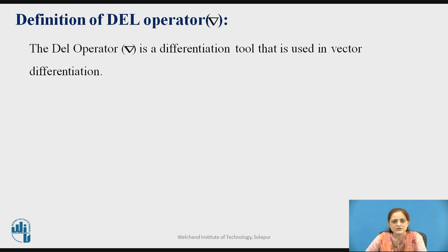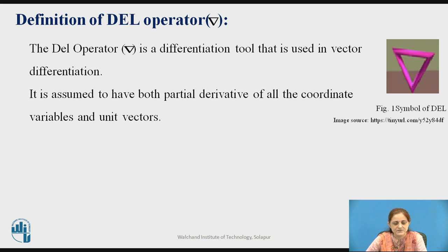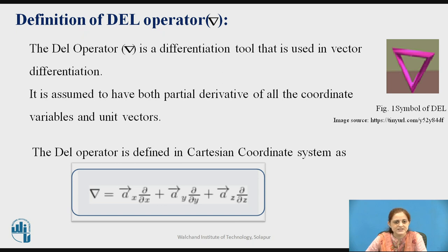Now, define the del operator. What is the del operator? The del operator is a differentiation tool used in vector differentiation. By using the del operator, you can get the partial differentiation with respect to each axis or each coordinate. The del operator is defined in the Cartesian coordinate system as: del = (∂/∂x) â_x + (∂/∂y) â_y + (∂/∂z) â_z.